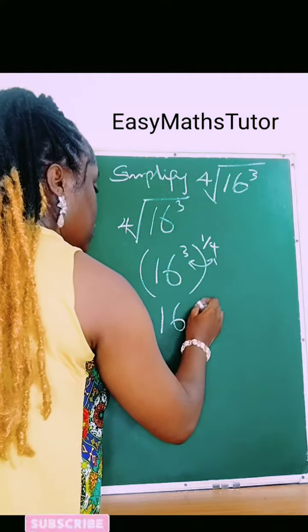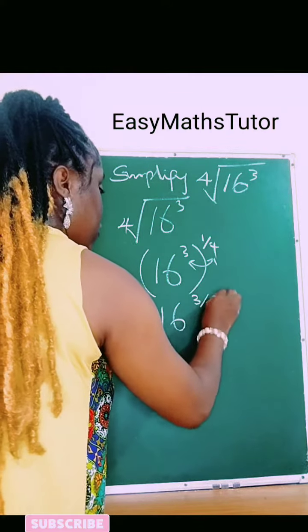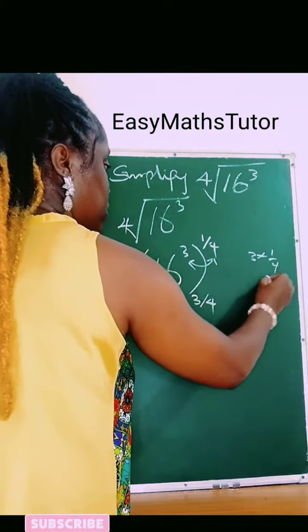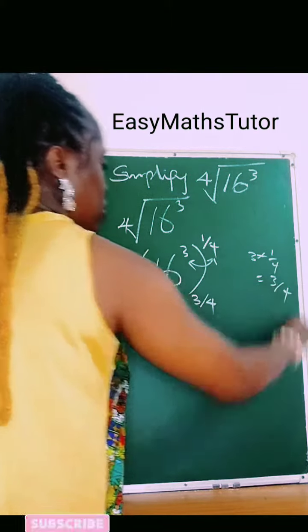We'll have 16 raised to power 3 over 4, right? Because 3 times 1 over 4 is equal to 3 over 4.